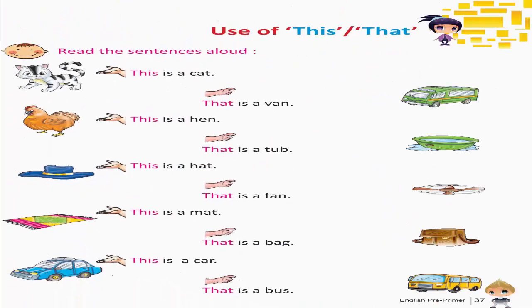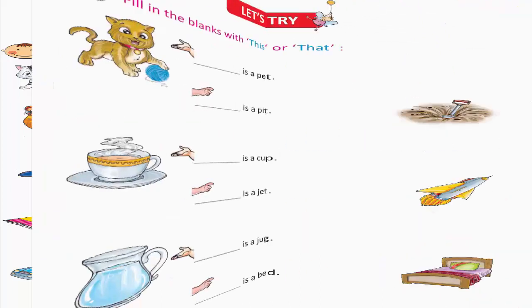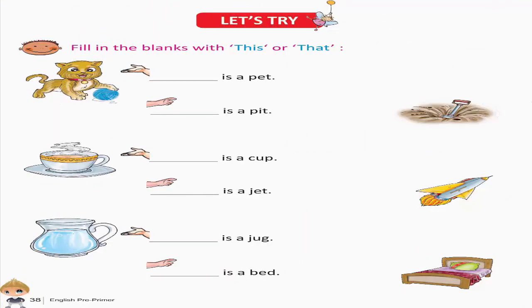Use of This and That. Read the sentences aloud: This is a cat. That is a van. This is a hen. That is a tub. This is a hat. That is a fan. This is a mat. That is a bag. This is a car. That is a bus. Let's try — Fill in the blanks with 'this' or 'that'.